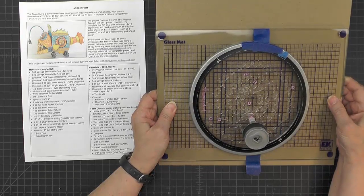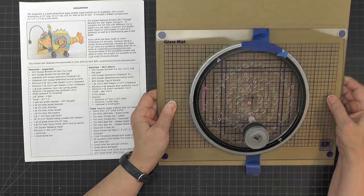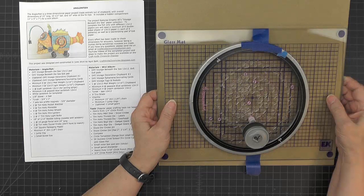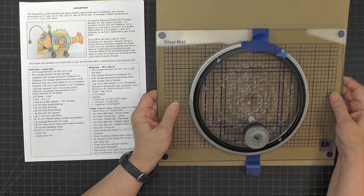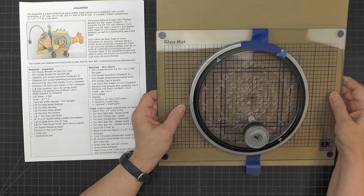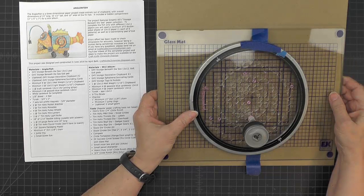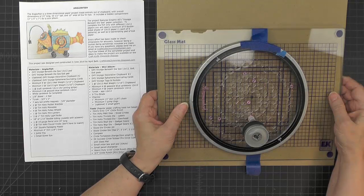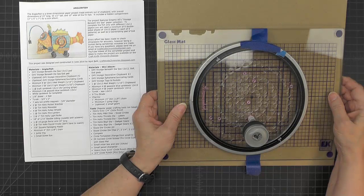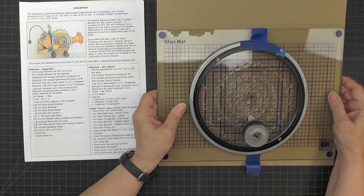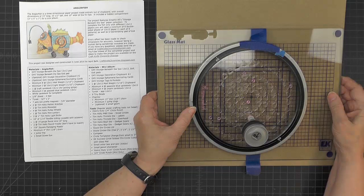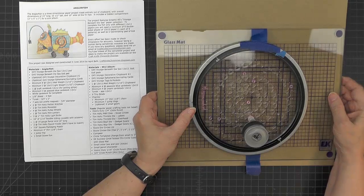Even though I have all those different circle templates, there are still some circles that are odd sizes in the project. For those I used this EK Success circle cutting system with a glass mat. I find that I can cut even the medium weight chipboard if I make sure to anchor the pieces down with some of the painters tape and then take my time and go around and around. It does a nice job.